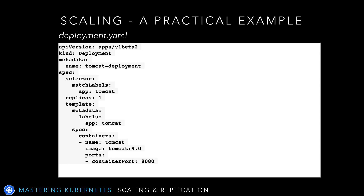Let's examine the line that says replicas: 1. At the most basic level, this is where we declare to Kubernetes how many copies of the pod we'd like to run. We can run as many as we have resources for on our cluster. There are various other properties we can set to define how these replicas are built and where they can run. But for now, let's keep it simple and simply tell Kubernetes we'd like to run four replicas, and leave the rest to Kubernetes itself.